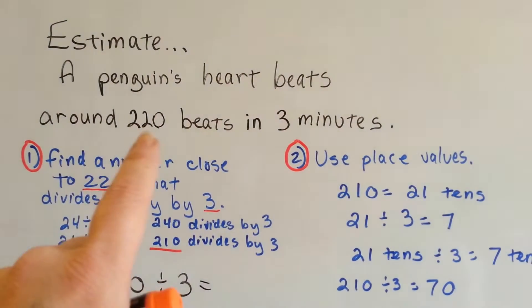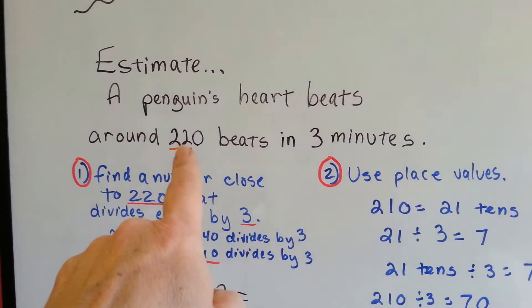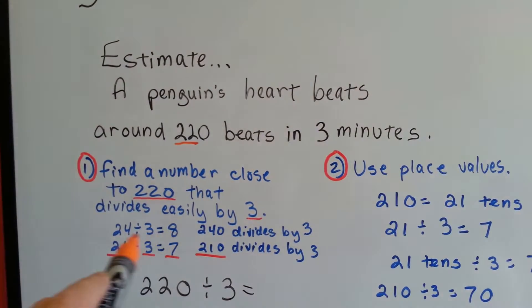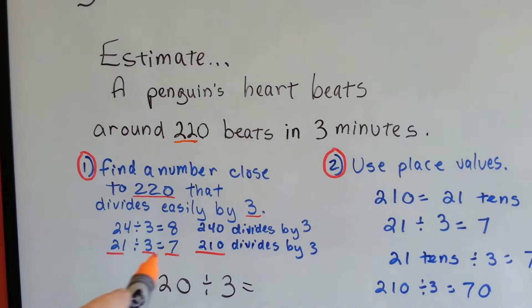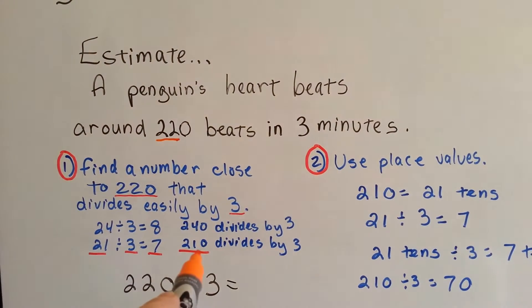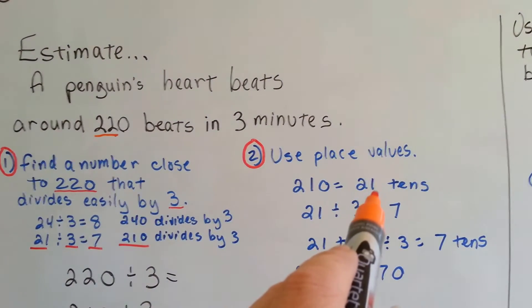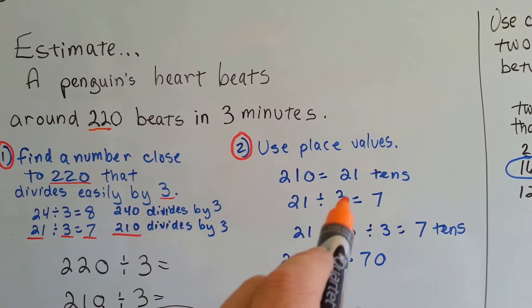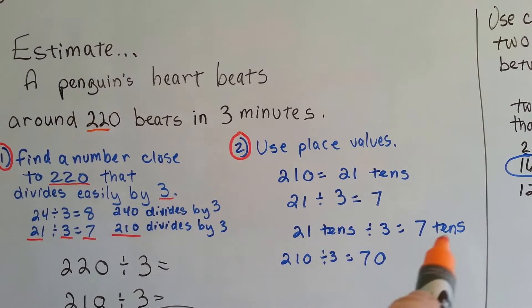So 22 — what number times 3 gets a quotient that's close to 22? Well, 24 divided by 3 is 8, and 3 times 8 is 24. And 21 divided by 3 is 7, and 3 times 7 is 21. I would say 210 gets us closer, so 210 divides by 3. 210 is the same thing as 21 tens — that's why we can use the 21. 21 divided by 3 is 7, so 21 tens divided by 3 is 7 tens.